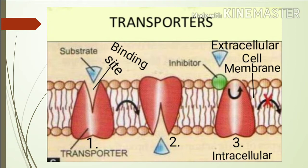यह था second state. फिर transporter अपना shape change करेगा, anti-clockwise move करेगा, और फिर उसका binding site extracellular की तरफ होगा. फिर नए substrate आएंगे, bind होंगे, turn करेंगे, फिर substrate को intracellular में drop करेंगे — ऐसे होते रहेगा जब तक opener bind रहेंगे. अगर opener की जगह inhibitor bind हो जाएगा तो transporter move नहीं करेगा, जिसकी वजह से substrate extracellular से intracellular में नहीं आएगा. इस तरह से हमने देखा कि transporter ने कैसे काम किया.